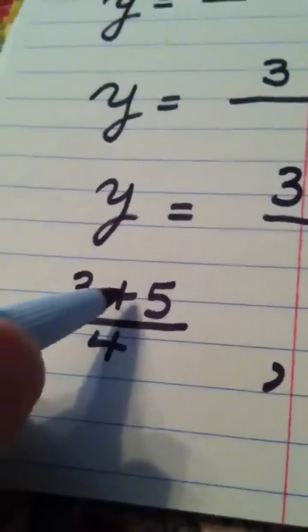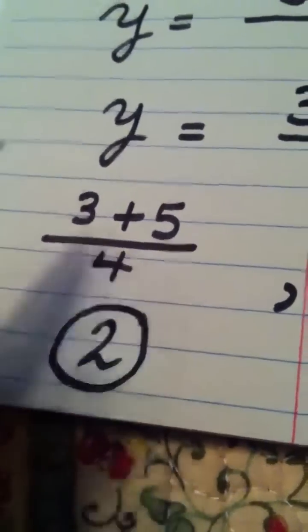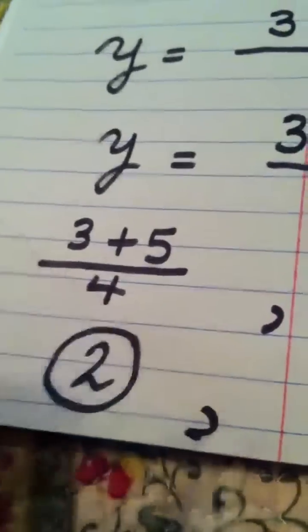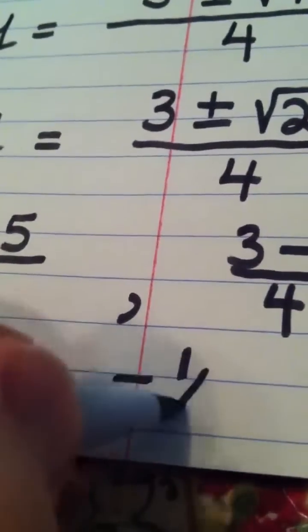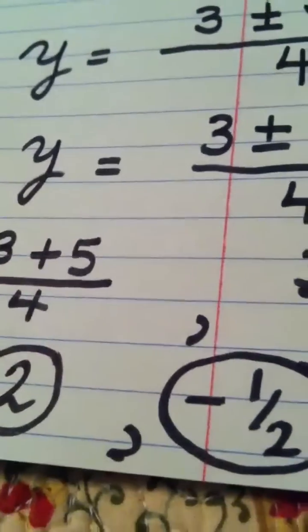Alright? 3 plus 5 is 8. 8 divided by 4 is 2. So one answer for y is 2. 3 minus 5 is negative 2. Negative 2 divided by 4 is a negative 1 half. So my solutions for this equation are 2 and negative 1 half.